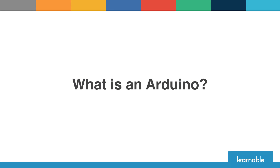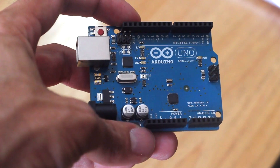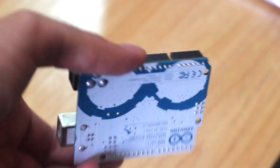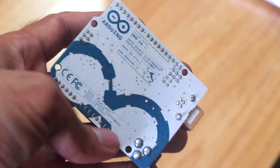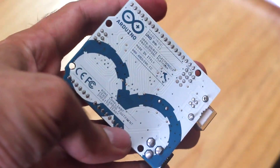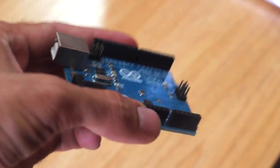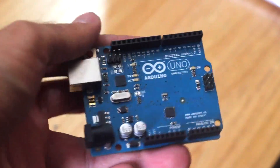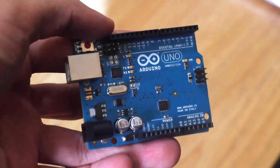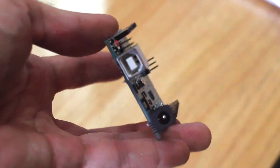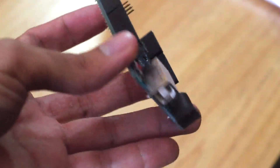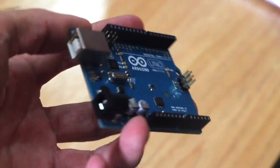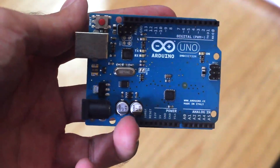What is an Arduino? A lot of people have read the name online or heard it mentioned but never actually seen one in action, so this is it. It's a single board microcontroller that's open source, which basically means you can control electronics using a platform that anyone can build and tinker with. The people at Arduino have open sourced it, which means anybody can make their own Arduino boards if they really want to.